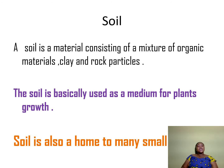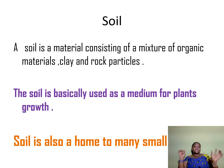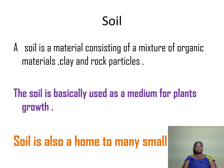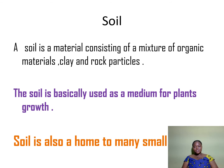Our next material is soil. A soil is a material consisting of a mixture of organic materials, clay and rock particles. The soil is basically used as a medium for plant growth. Soil is also a home to many small animals, and you have been seeing them in the soil.